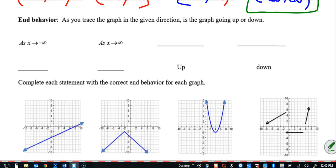Now we're looking at end behavior. So as you trace the graph in a certain direction, is the graph going up or down? That's what we're asking you. So it's important to understand the notation here. You'll see this: as x goes to negative infinity.